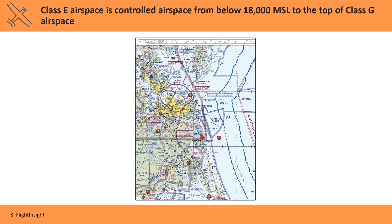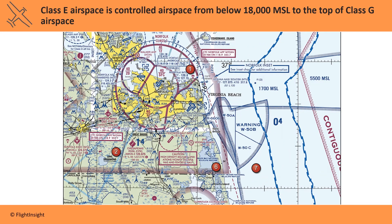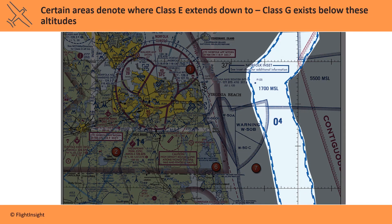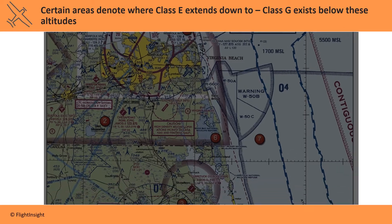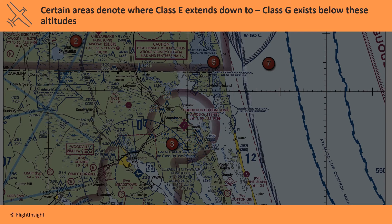The altitude where Class G ends and Class E begins is indicated on the charts. Here we see Class E going down to 1,700 MSL with Class G below that. Inside the shaded magenta circle, Class E goes down to 700 feet AGL with G below it, while outside the shading, it's E down to 1,200 and G below that. This is the more common way that you'll see Echo on charts — the controlled airspace is lower to the ground near airports than it is away from airports.